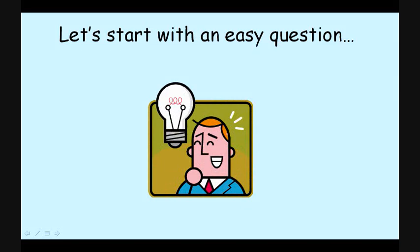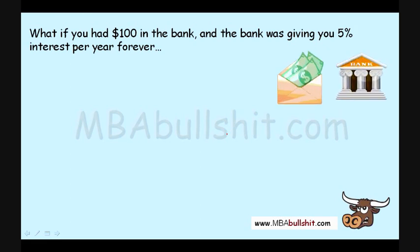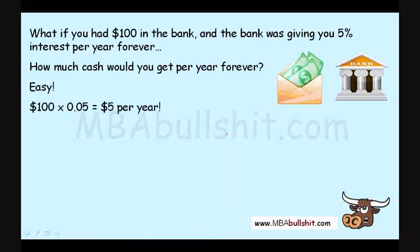Let's start with an easy question, and it will also continue to be easy, I promise. What if you had $100 in the bank and the bank was giving you 5% interest per year, every year, forever? So how much cash will you get every year? You get 5%, so how much cash is that every year? That's easy — $100 times 0.05, which means 5%, you will get $5 per year.